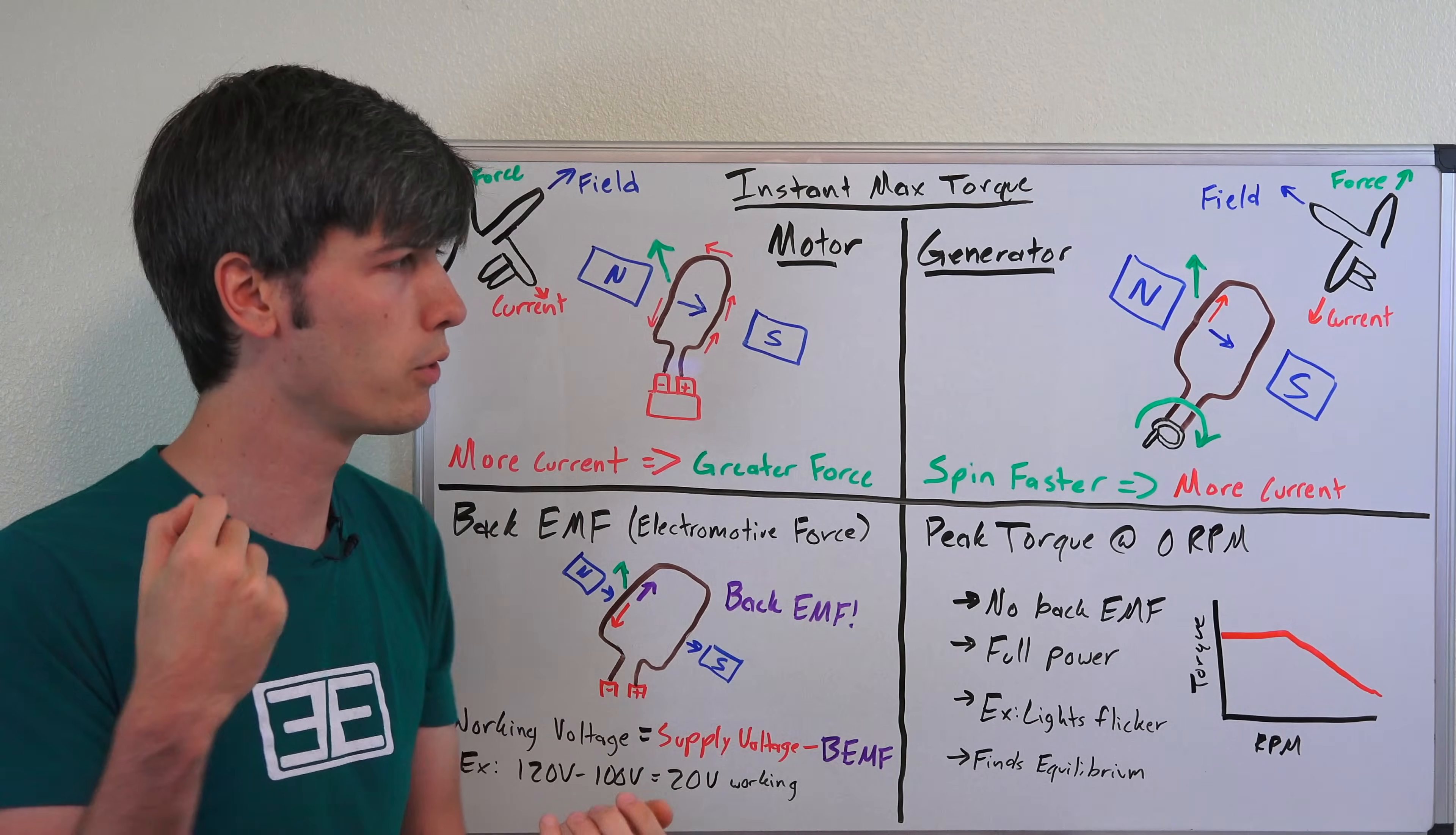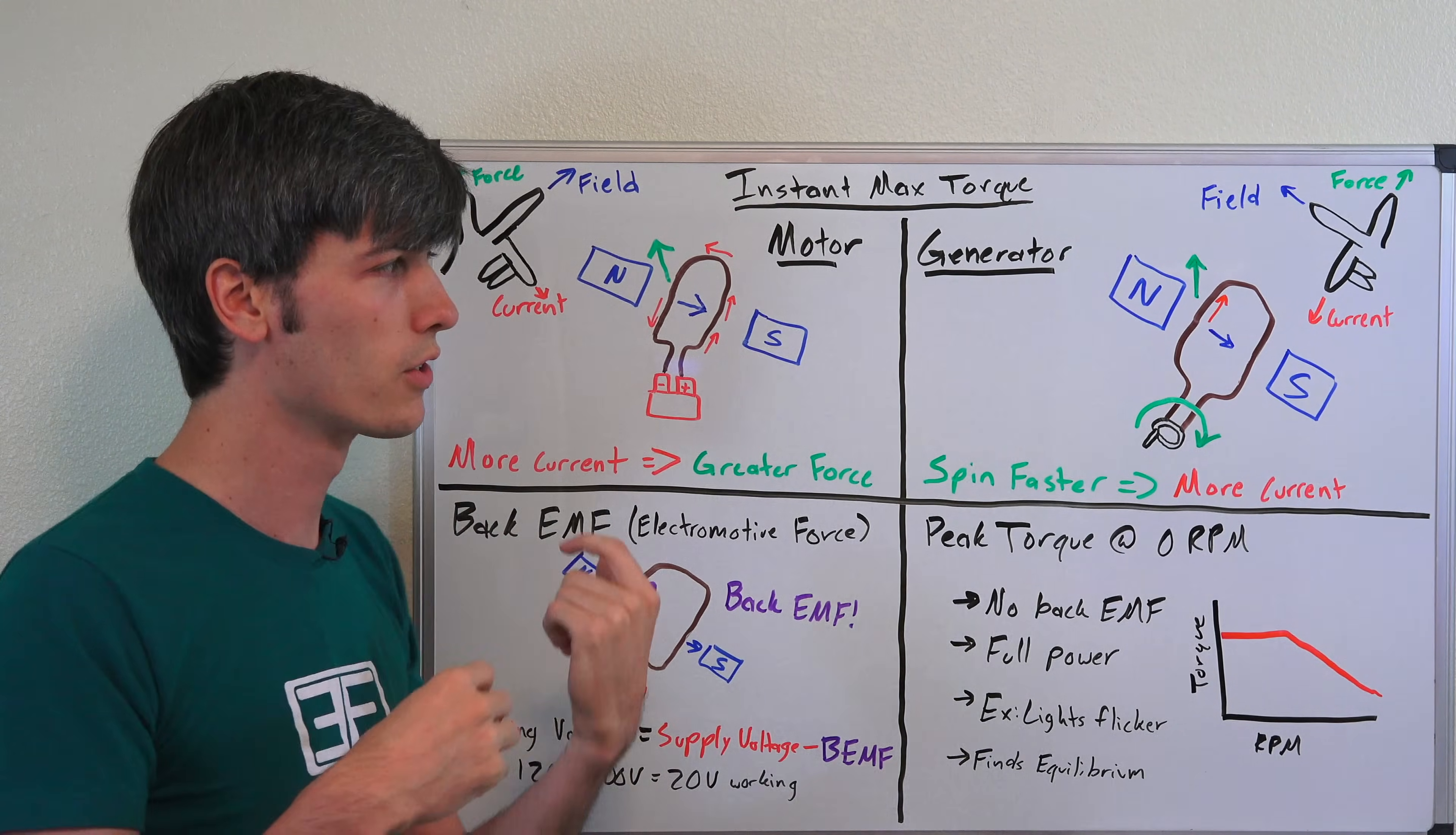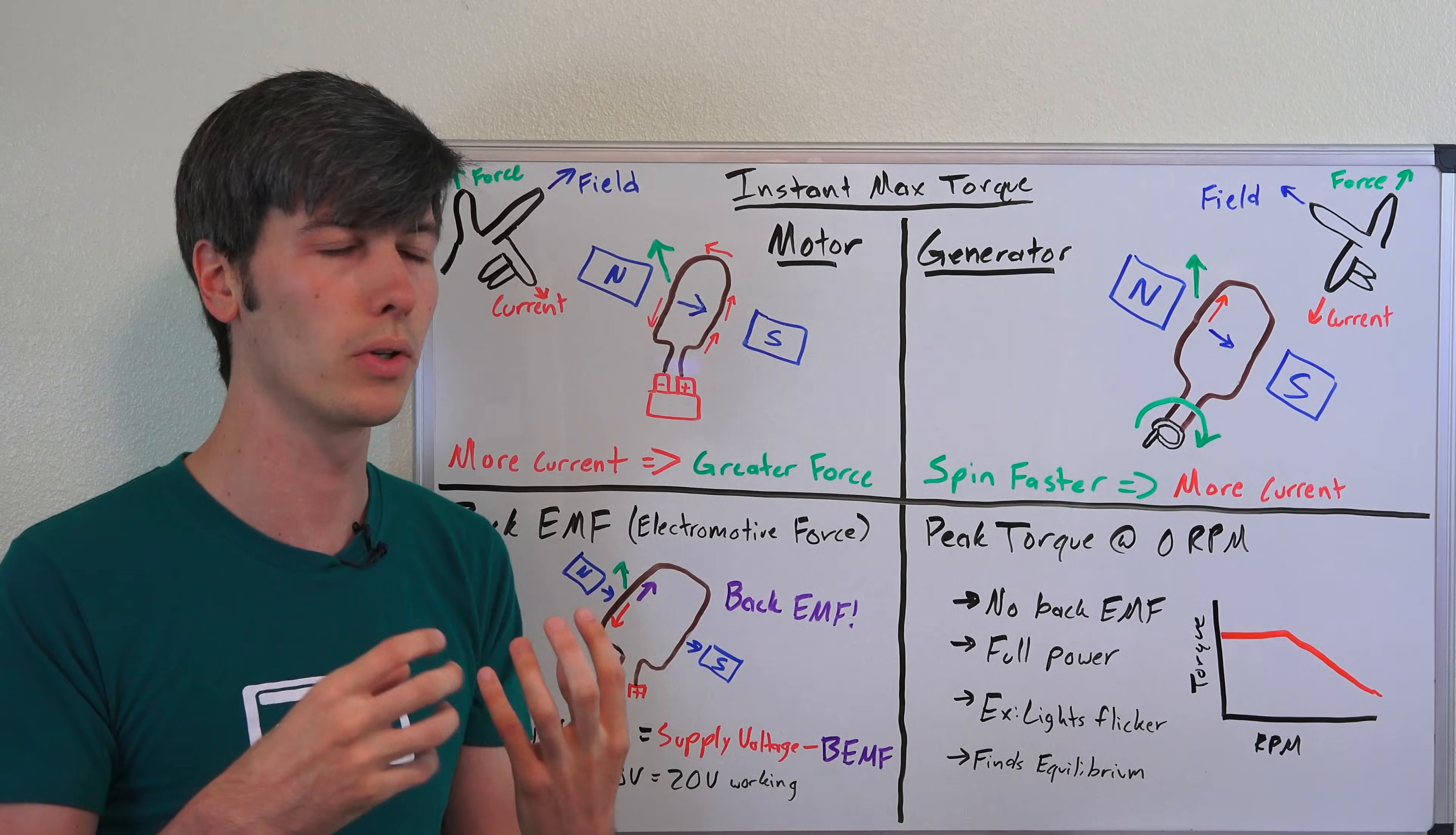You may notice this for example if you turn on a vacuum cleaner in your house and the lights will dim very quickly but then they'll come right back after the vacuum cleaner is spinning up. What's happening there is right when you turn that vacuum cleaner on, the current draw from the vacuum cleaner is really high.